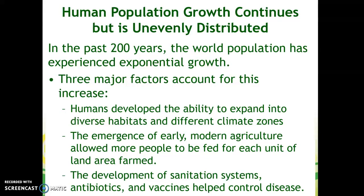Second, the emergence of early modern agriculture allowed more people to be fed for each unit of land area farmed. We could stay in one spot and wouldn't have to move around and hunt based on where our food source went. We could actually grow our own food, and agriculture allowed us to feed more from a smaller space.